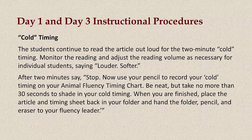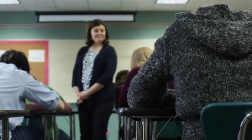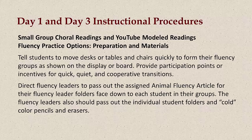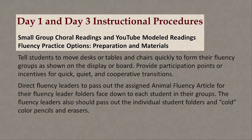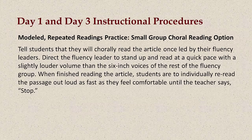When you're finished, place the article and timing sheet back in your folder and hand the folder, pencil, and eraser to your fluency leader. Note that two-minute fluency timings, rather than the traditional one-minute timings, more accurately assess student progress. Students also access more challenging reading levels within the same timing on the reading fluency articles. Teachers are provided two options on day one and three to remediate reading fluency with modeled and repeated readings. The first option, after the cold timing, is the small group choral reading option. Tell students that they will chorally read the article once, led by their fluency leaders. Direct the fluency leader to stand up and read at a quick pace, with a slightly louder volume than the six-inch voices of the rest of the fluency group. When finished reading the article, students are to individually re-read the passage out loud, as fast as they feel comfortable, until the teacher says stop.